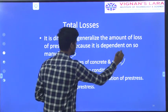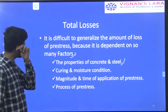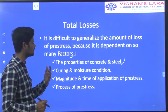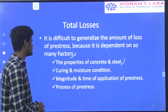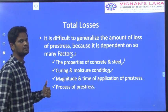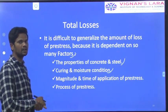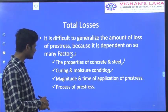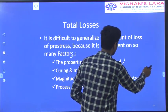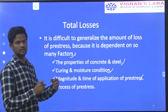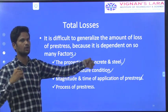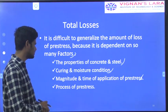The loss of pre-stress depends upon the properties of concrete and steel — the elastic properties, strength properties, and tension properties. Next, it depends on curing and moisture conditions: how much time you give for curing, and the environmental moisture condition. Then, the magnitude and time of application of pre-stress — how much pre-stressing force is applied and what quantity of pre-stressing force is used — are also factors we calculate.